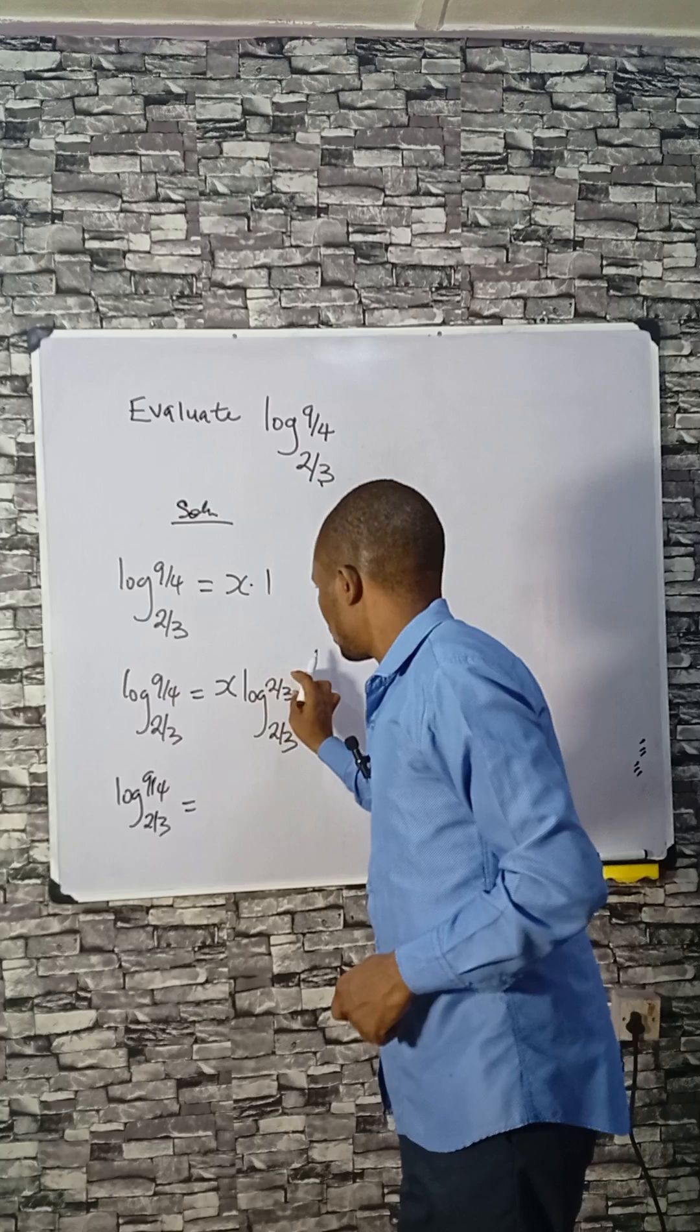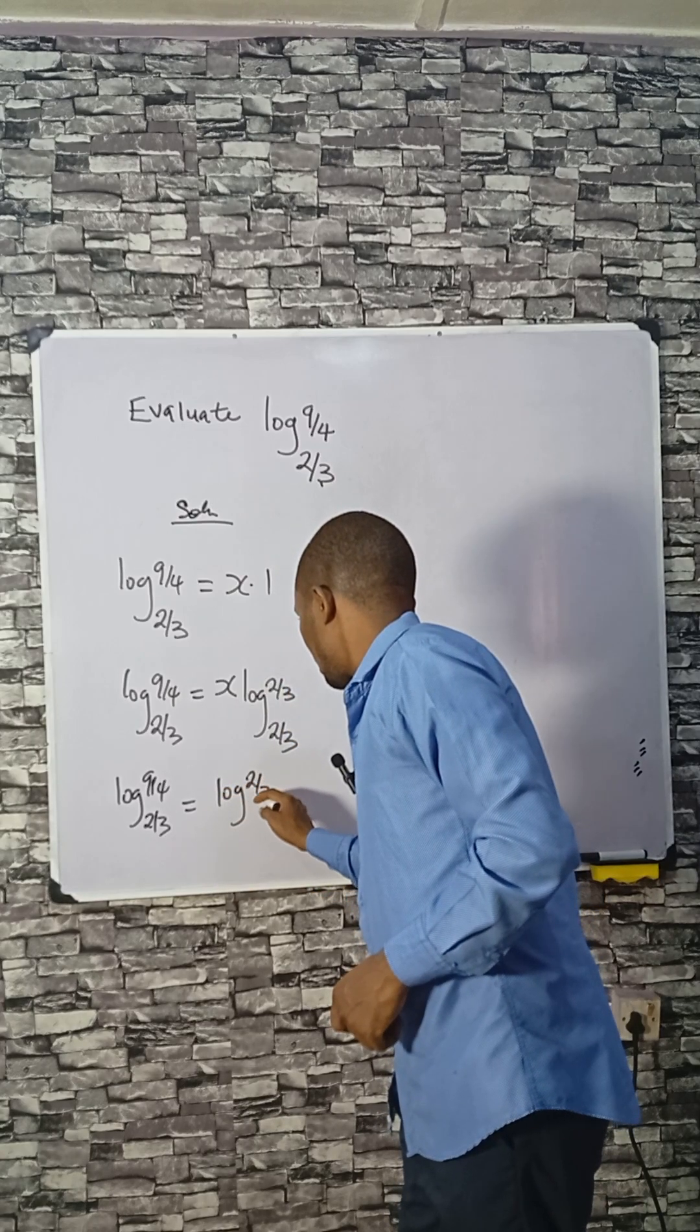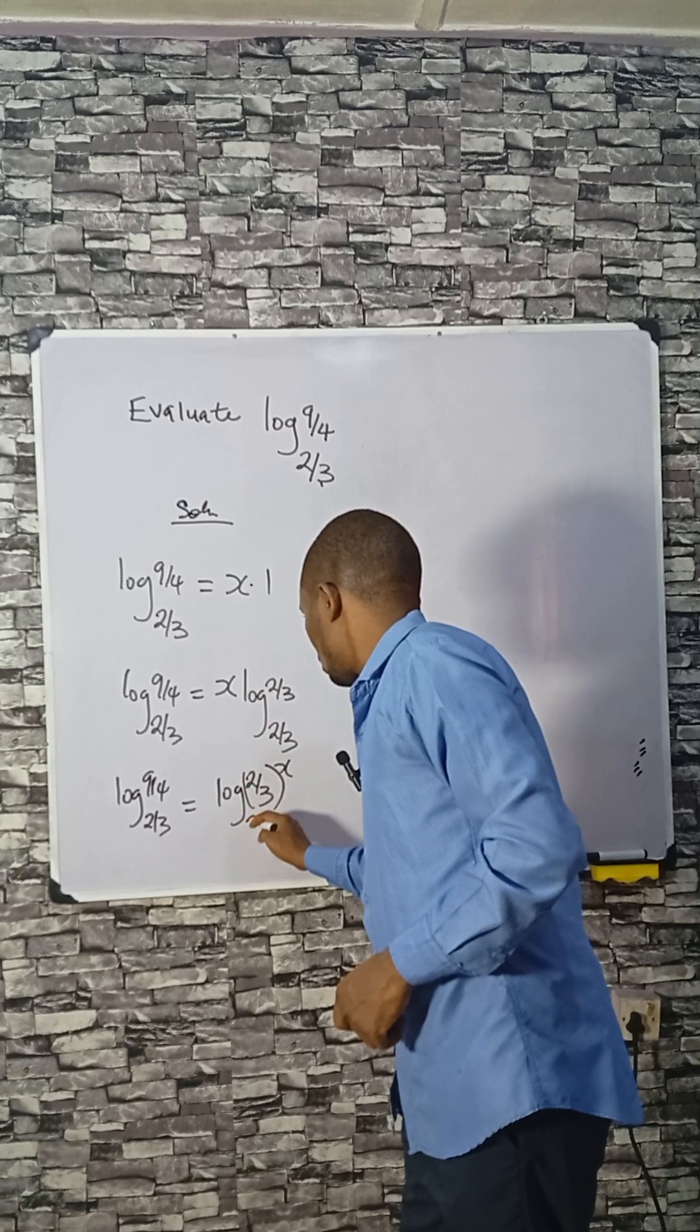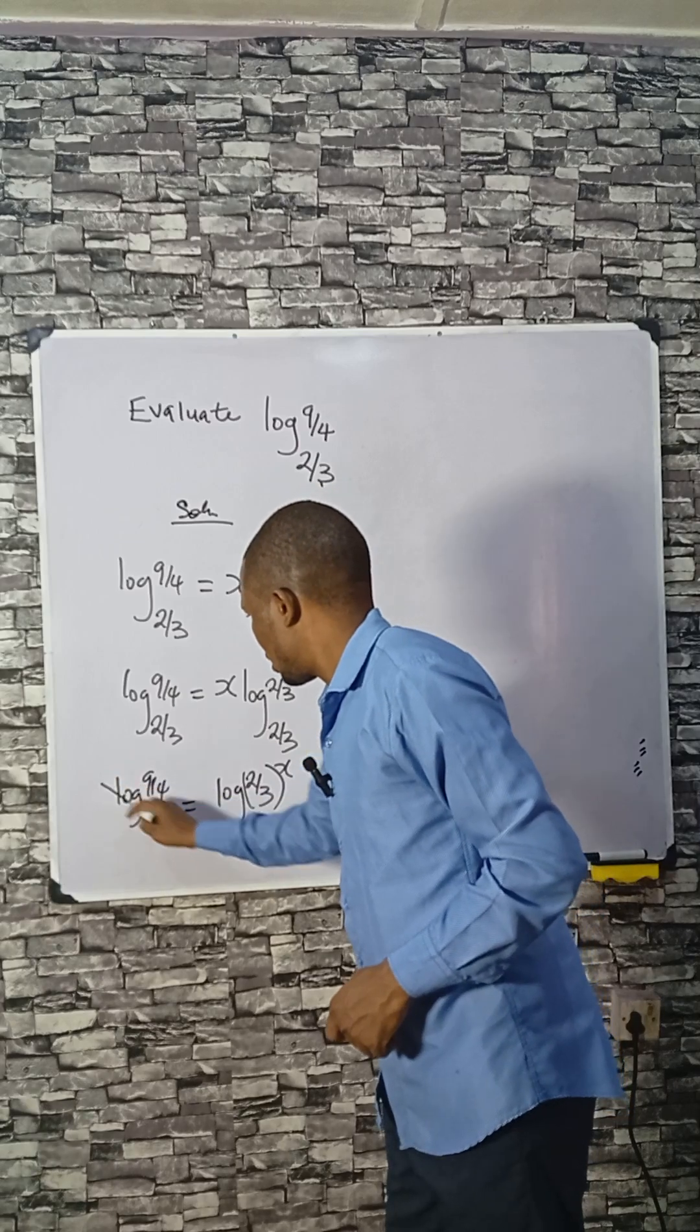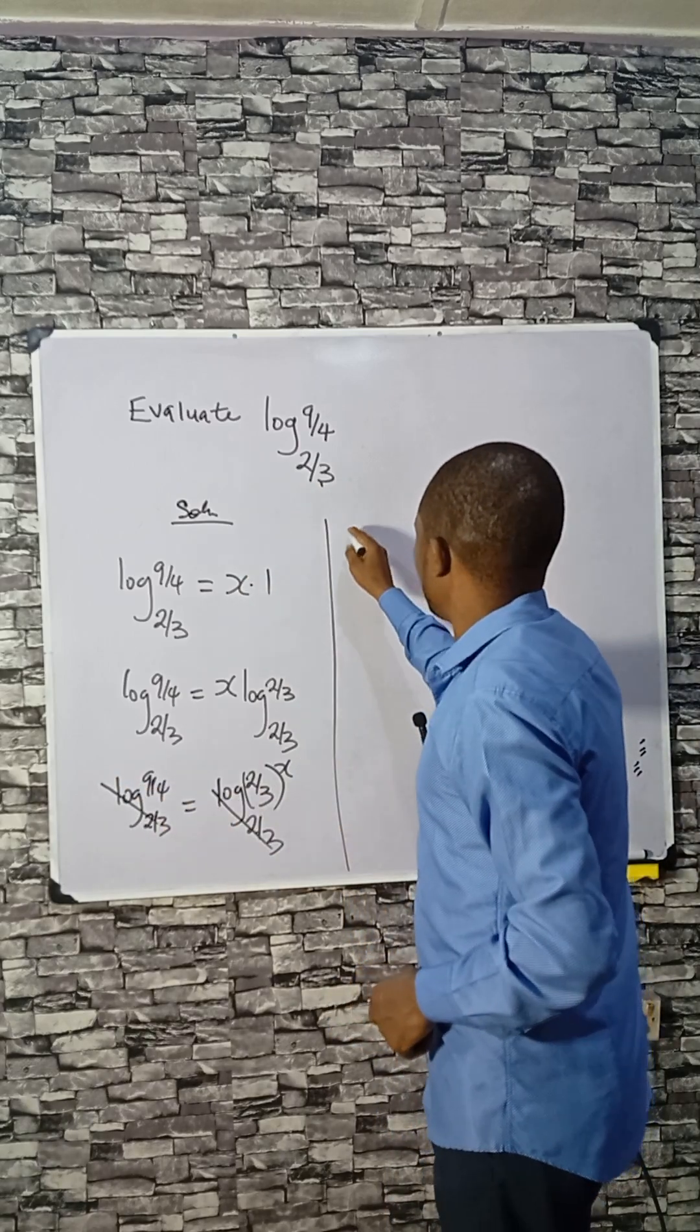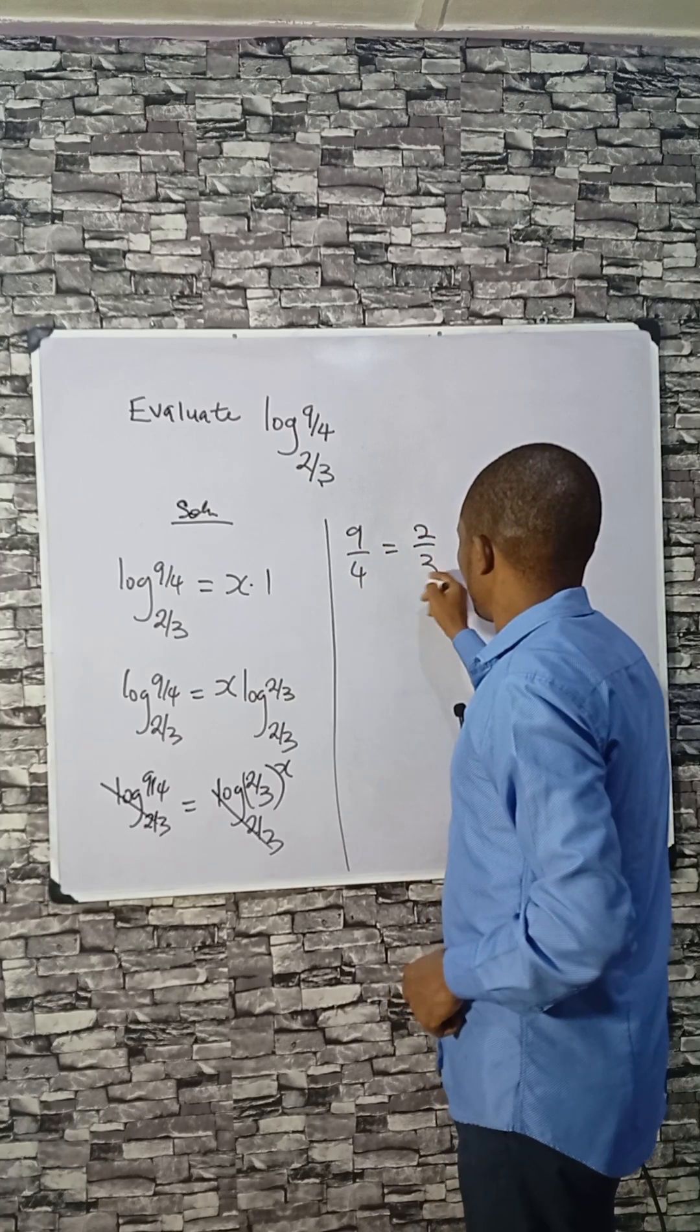To take this to this side, that means we have log base 2 over 3, 2 divided by 3 raised to power x is 2. If you check closely, this and this will go, so we have 9 divided by 4 equals to 2 divided by 3.